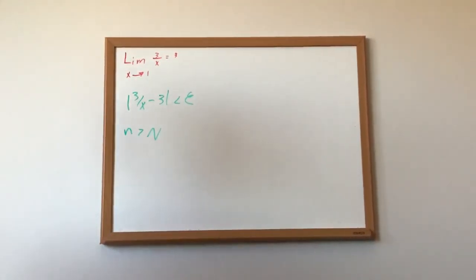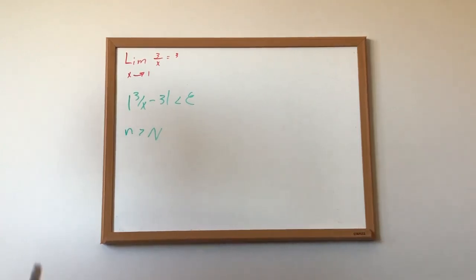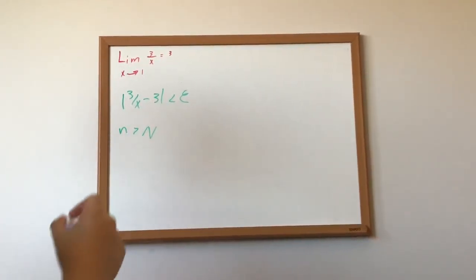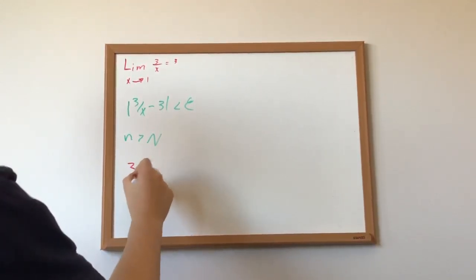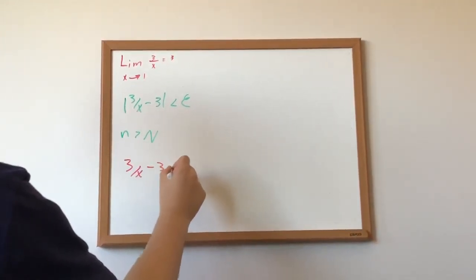So, for simplifying this, we all know we are solving for a positive value, so we can cancel out the absolute value sign. We get 3 over x minus 3 is less than epsilon.